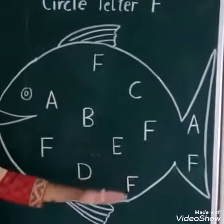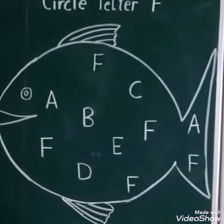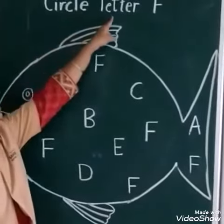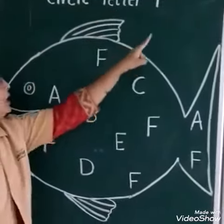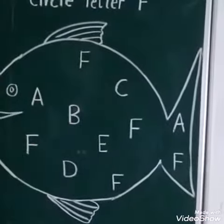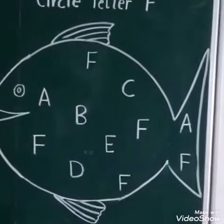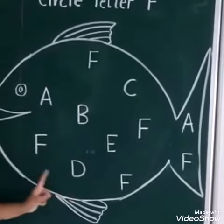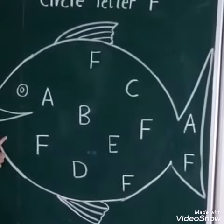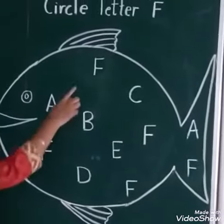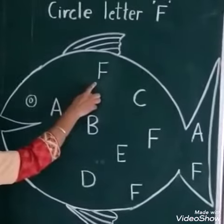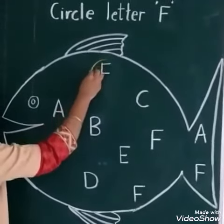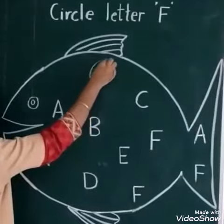In the fish there are many letters, but the instruction is you have to circle the letter F only. So take your pointer finger and keep your pointer finger on each letter. Are you ready? Ok, let's start. Which letter is this? This is letter F. So circle letter F.